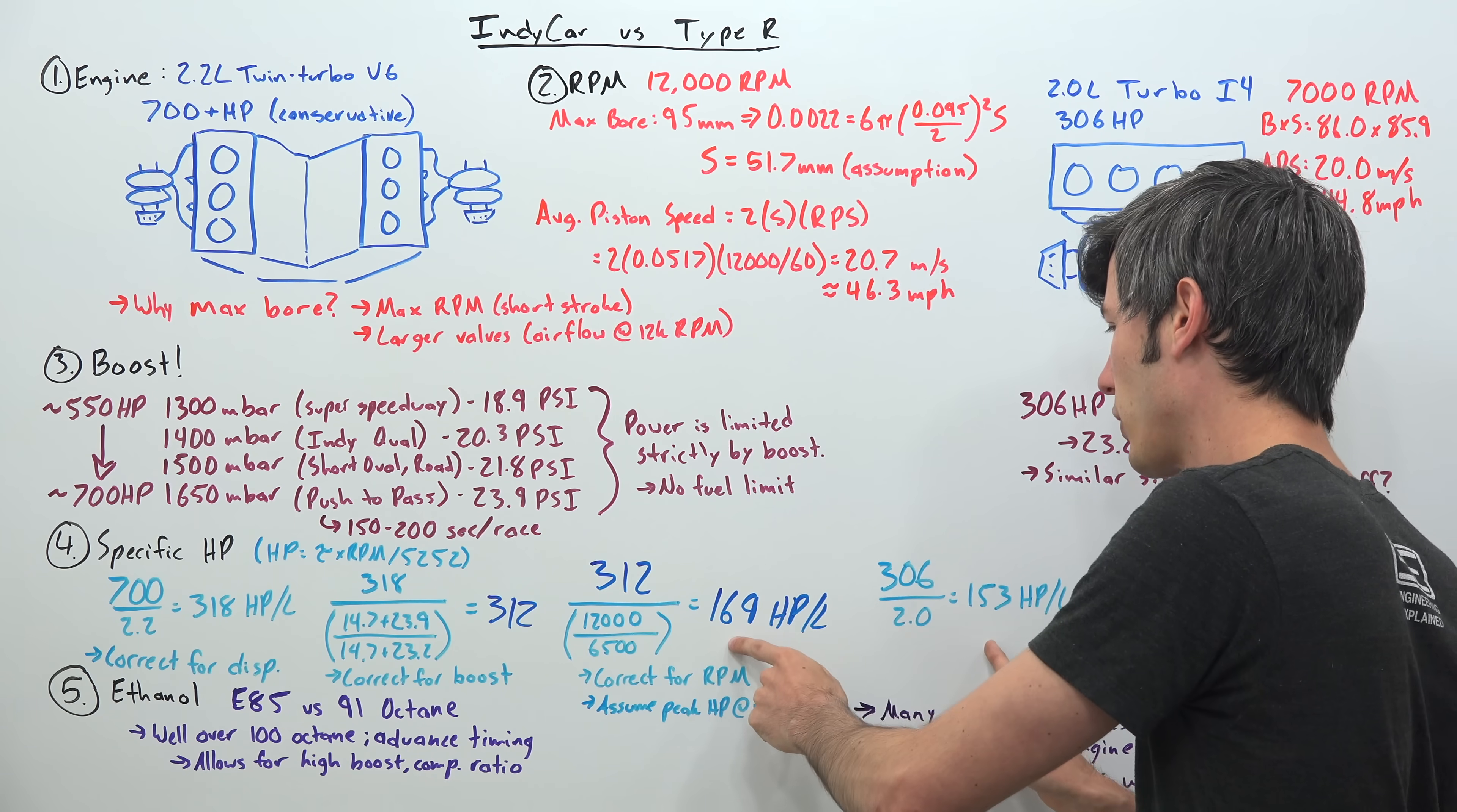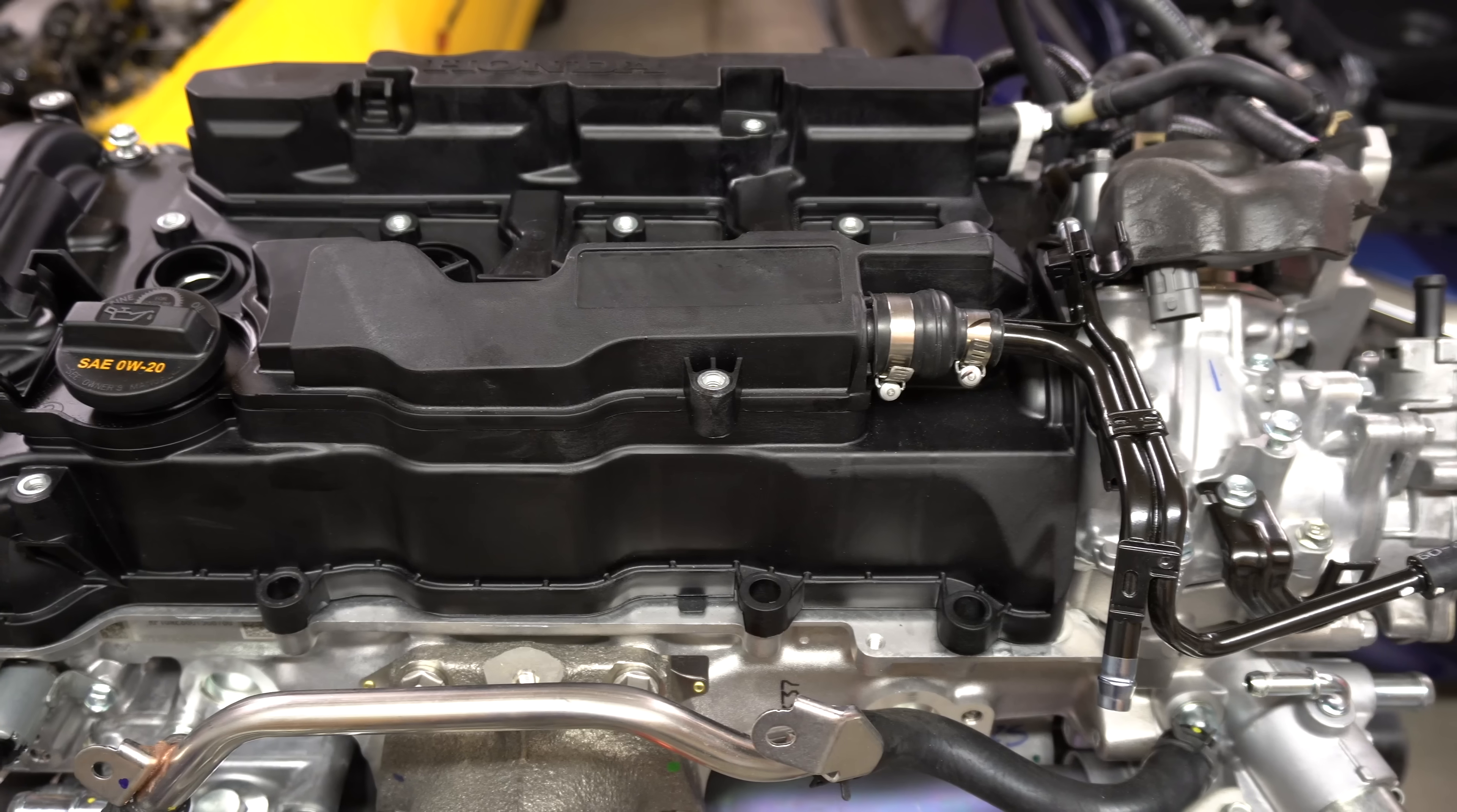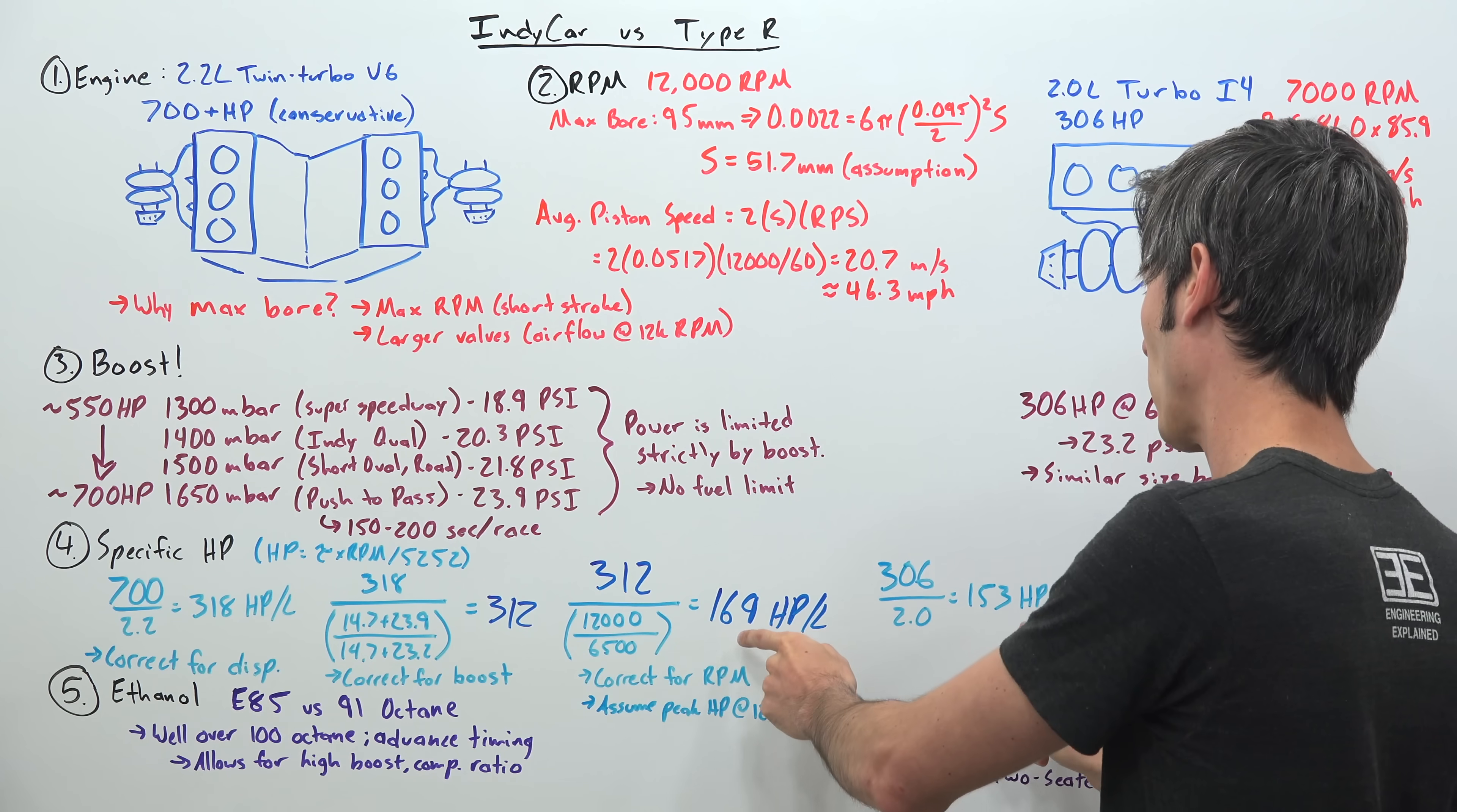So why is the IndyCar making more power? And this comes down to the fuel. And so in IndyCar they are running E85, or 85% ethanol, 15% gasoline, versus the Honda Civic Type R which is running 91 octane gasoline. So by using this E85 which has a much higher octane level, well over 100, could be around 108 for the octane level, this allows for advanced ignition timing, it allows for you to use a higher compression ratio. We don't know what the compression ratio used is within this engine. The Civic Type R is about 9.8 to 1, but it allows for a bit more flexibility in things like boost, in that compression ratio, in your ignition timing. And so that can help squeeze out a few extra horsepowers. So that's ultimately giving you that additional difference that you have right there.